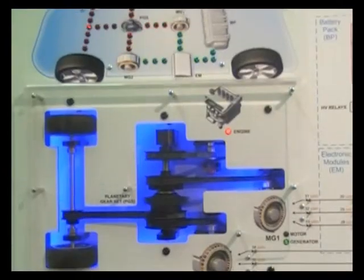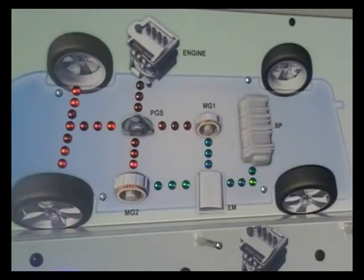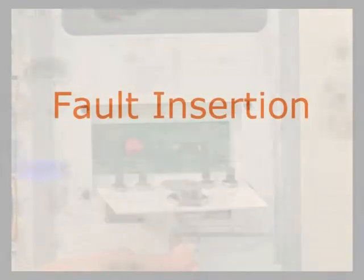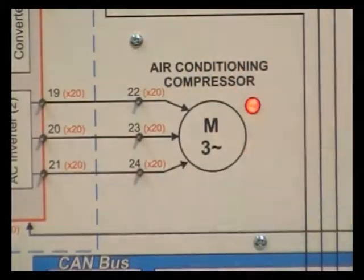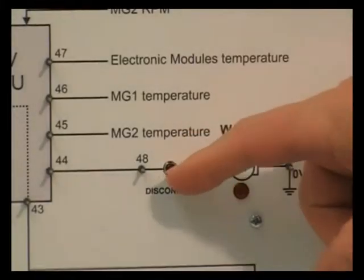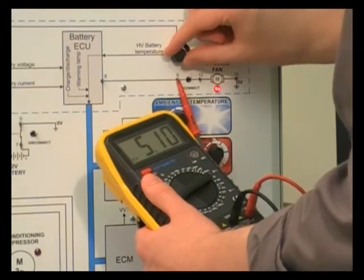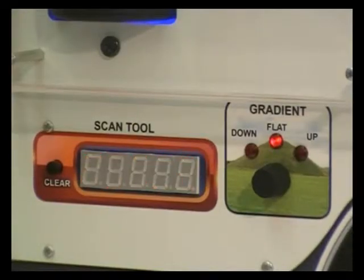See clearly the direction of mechanical and electrical energy through the hybrid system using the power flow indicators. Investigate component function and fault-finding techniques with the electrical system schematic and test area, all using safe voltages. Use the fault insertion switches and onboard fault code reader.